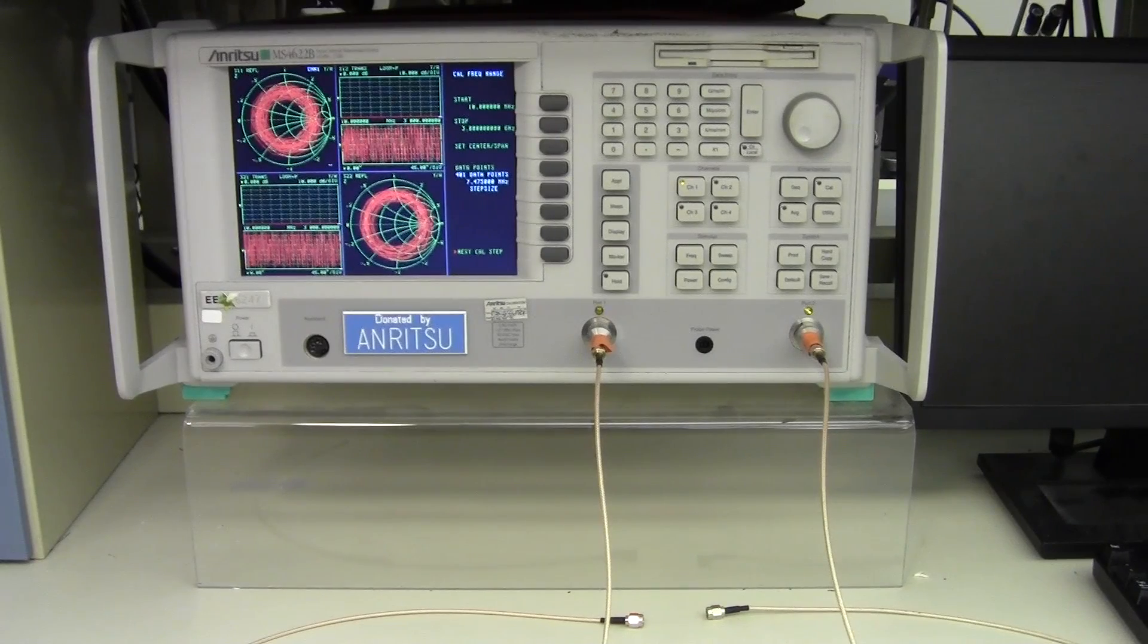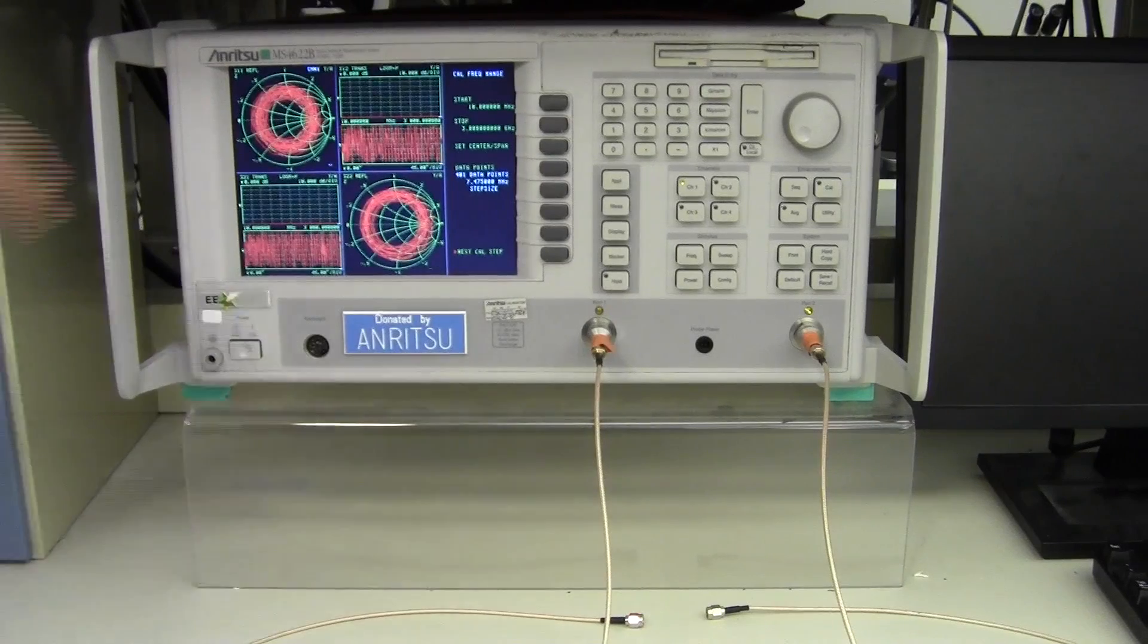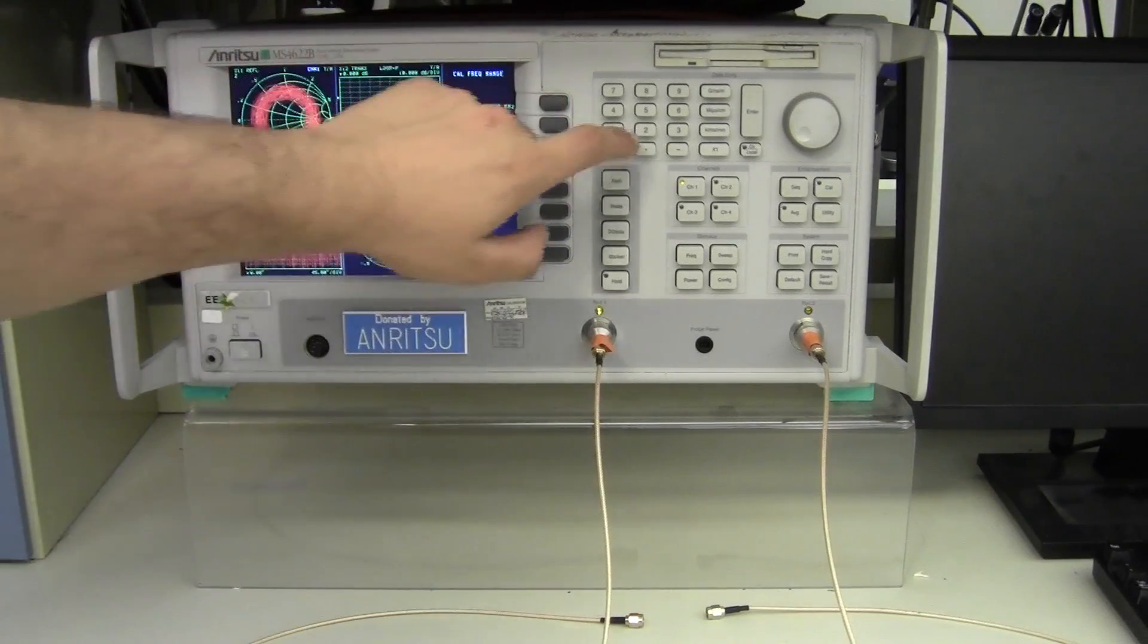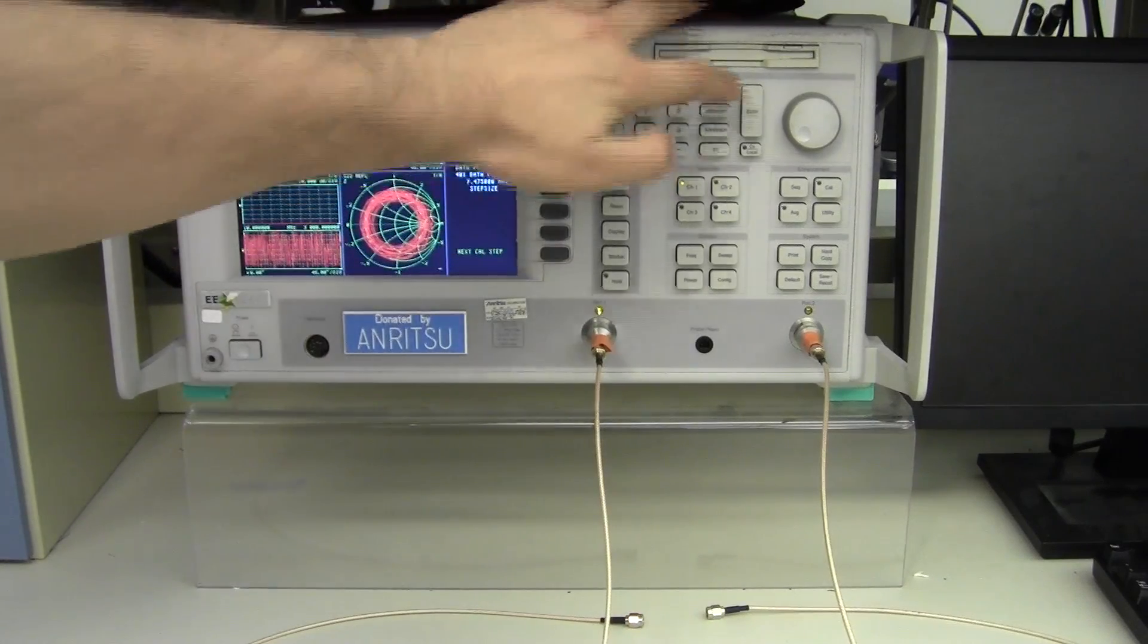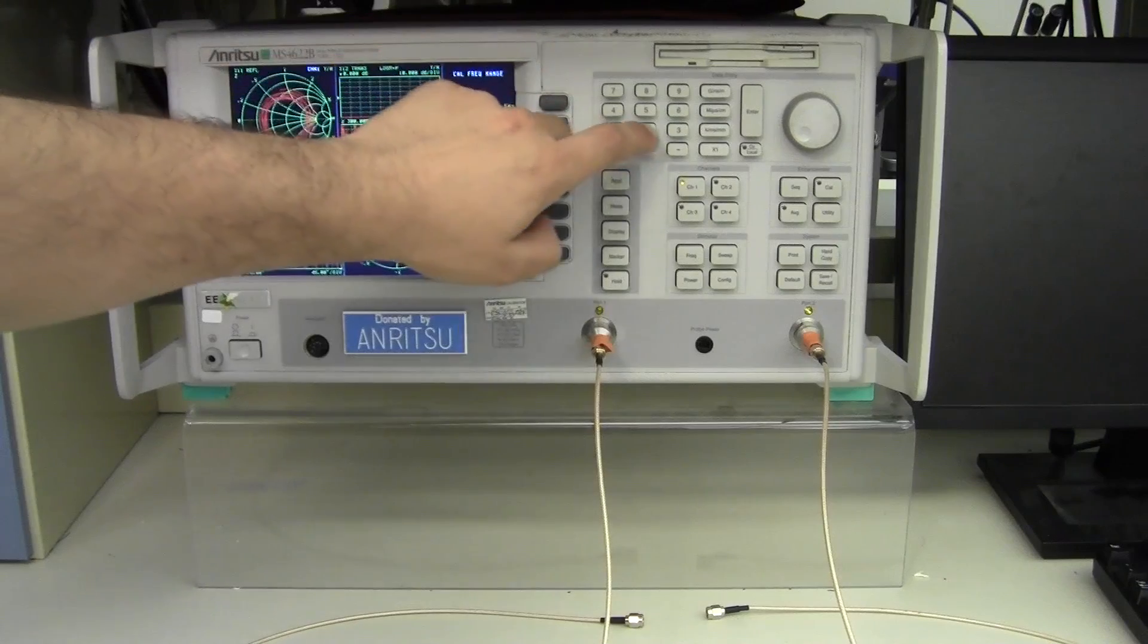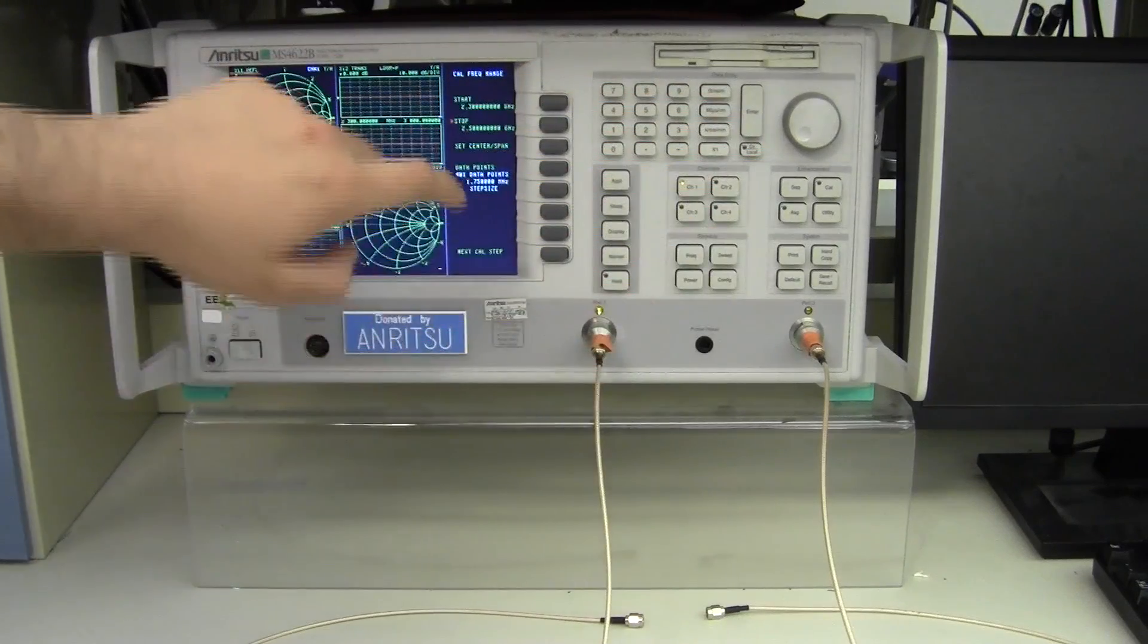Right now I happen to be interested in the 2.4 GHz ISM band, so I'm going to set the lower and upper ranges. 2.3 gigahertz, and then I put my high range at 2.5 gigahertz.